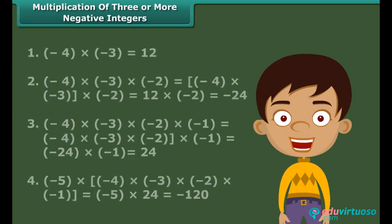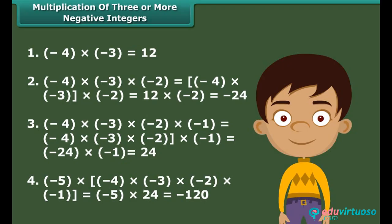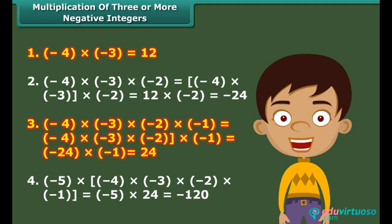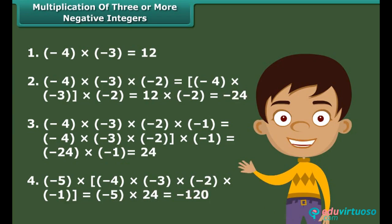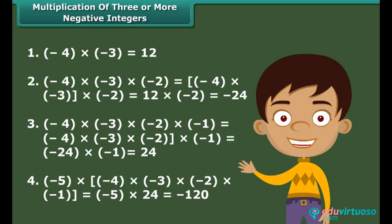We can see that in examples where the number of negative integers multiplied is even (two and four), the product is a positive integer. Where the number is odd, the product is negative. Hence: if the number of negative integers in a product is even, the product is positive; if odd, the product is negative.